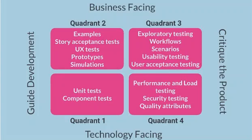These are the Agile Testing Quadrants. The Agile Testing Quadrants help organize the types of tests used in software development. While these quadrants are numbered, they do not require to be followed in any particular order. That's something to keep in mind.